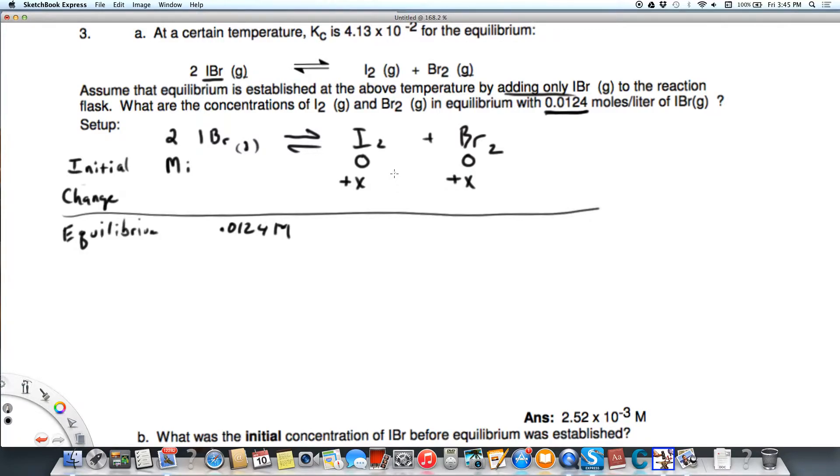So then the change for IBr is going to be 2 times x, and it's going to be negative. So at equilibrium, it's going to be the initial moles minus 2x equals 0.0124 molar. And then the concentration of iodine and bromine are going to both be x.